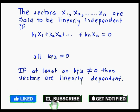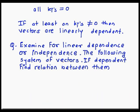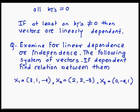Let us start with an example: examine for linearly dependency and independency the following system of vectors; if dependent, find the relation between them. Consider x1 = (3, 1, -4), x2 = (2, 2, -3), and x3 = (0, -4, 1).